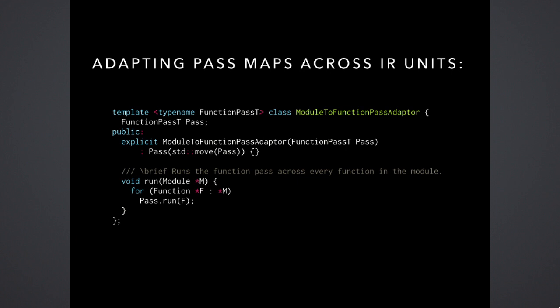We also need the ability to move between layers of IR — some way of adapting between different layers. The simplest idea: a module-to-function pass adapter. It wraps a function pass and is itself a module pass. It does the obvious thing: takes the module, finds every function in the module, and runs the function pass on each function. There's nothing fancy — the entire code for this is on the screen. With this, we're done at the simplest baseline, but now we need it to actually serve the more complicated needs of LLVM, which primarily have to do with analyses.